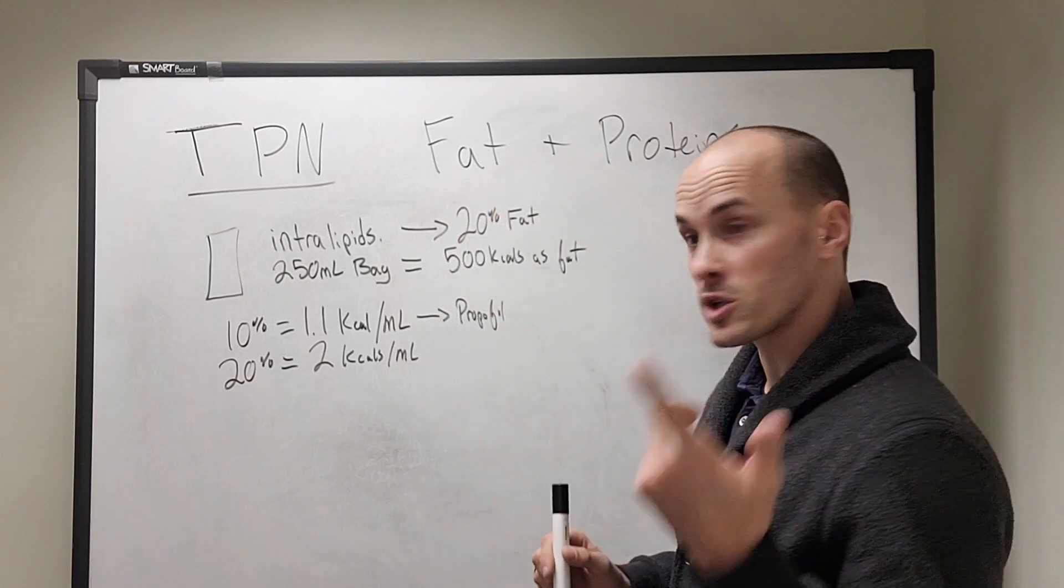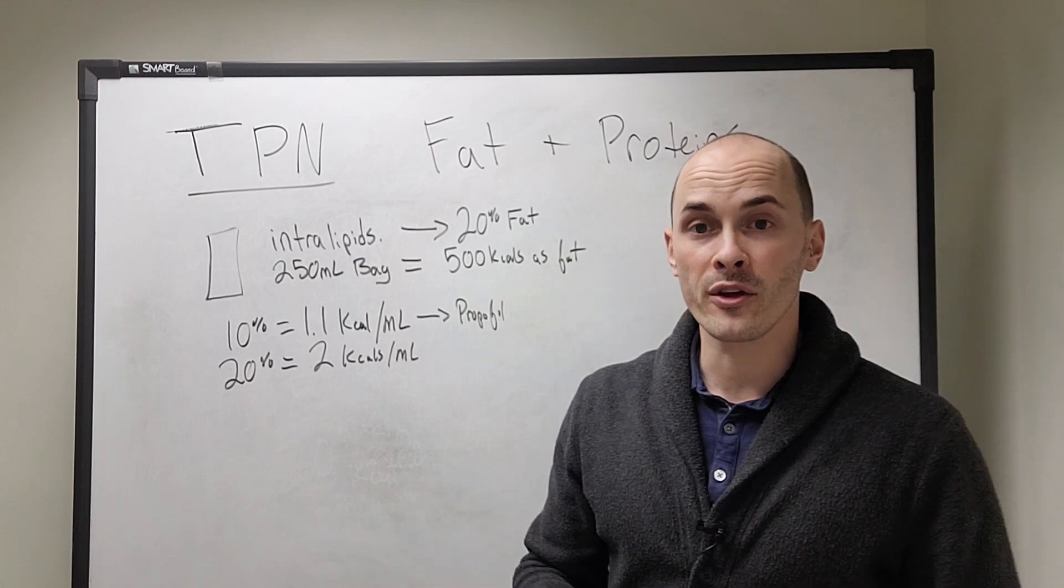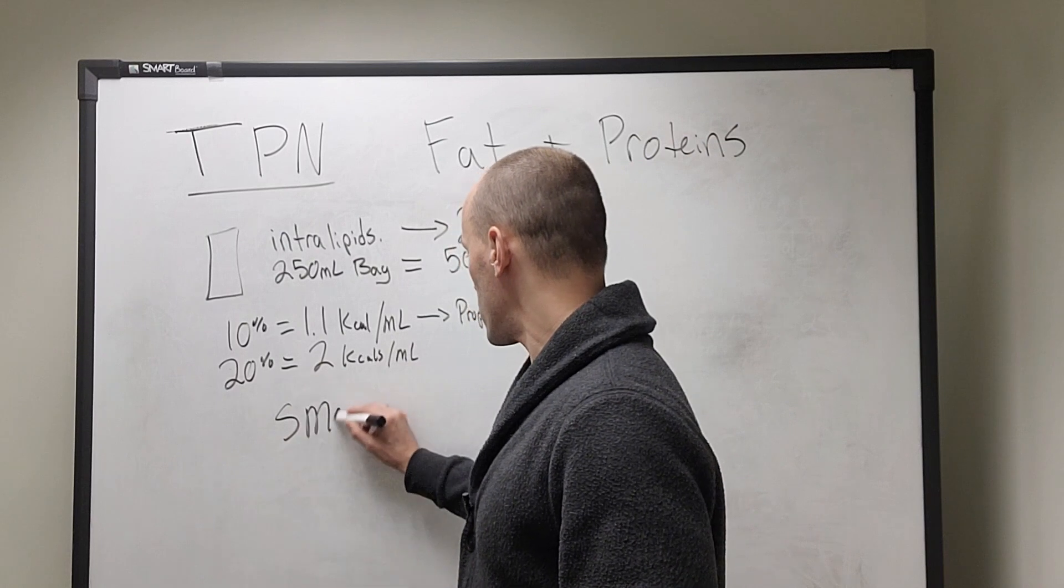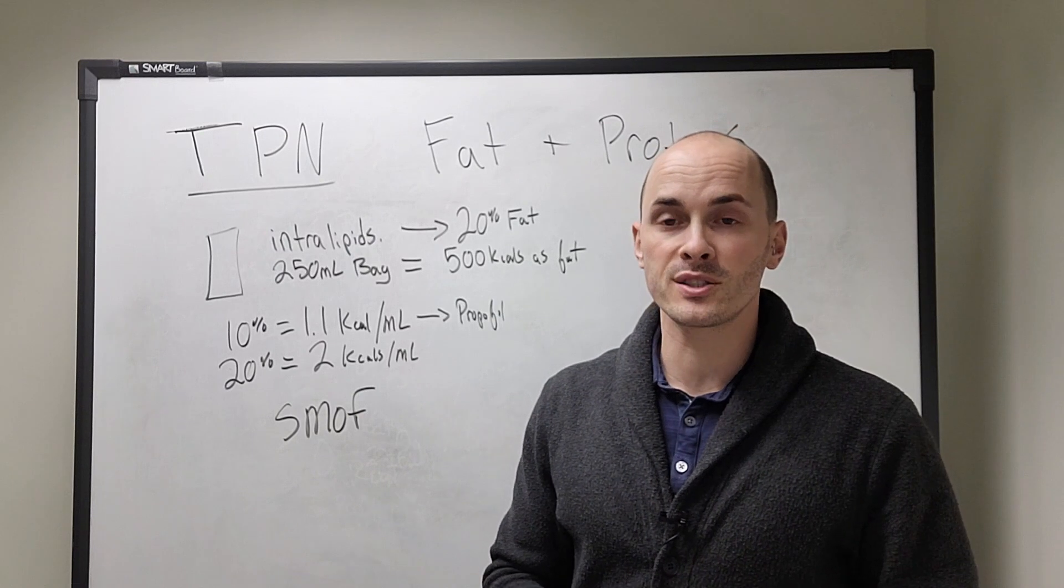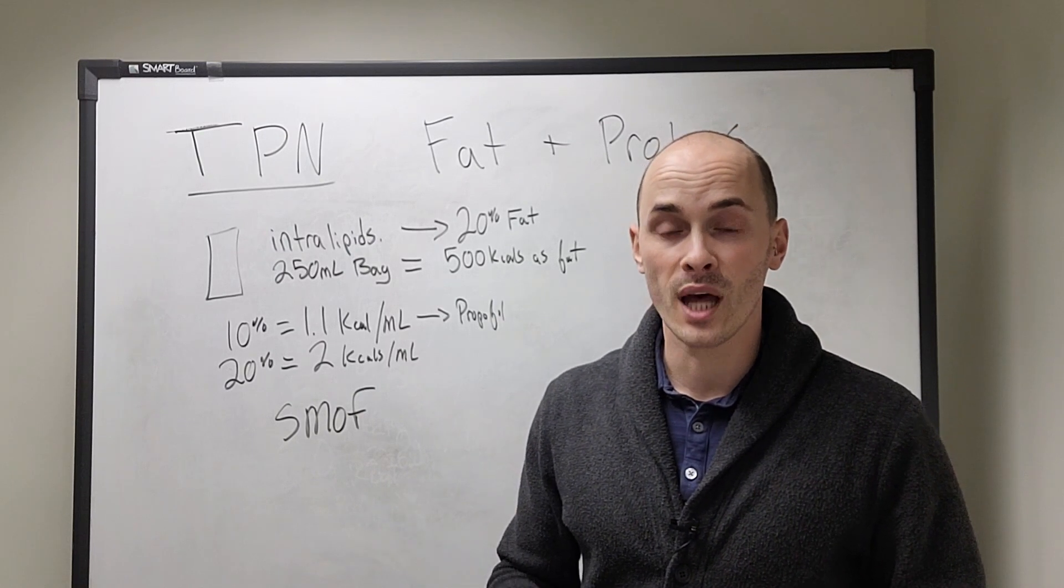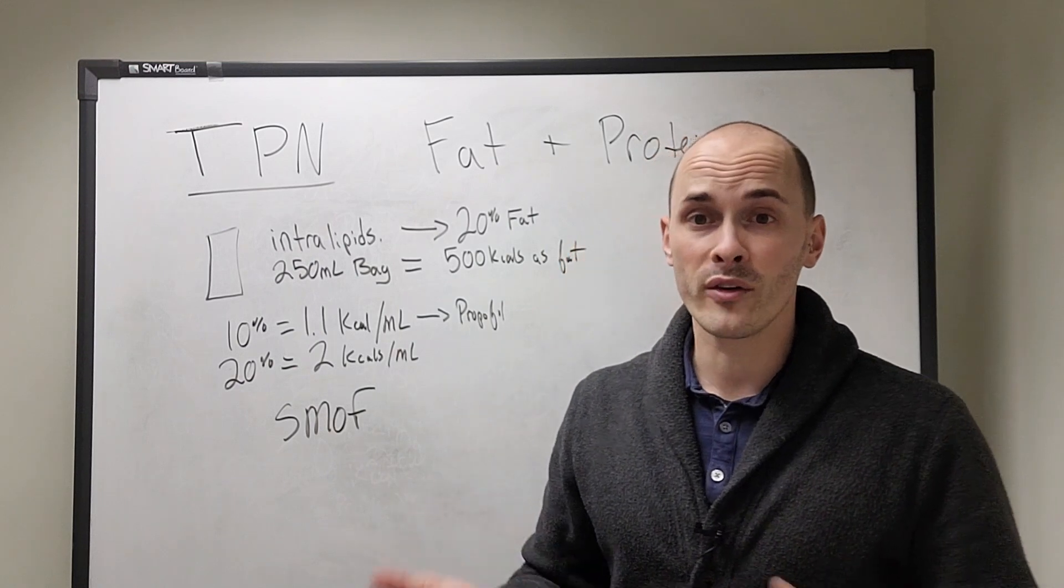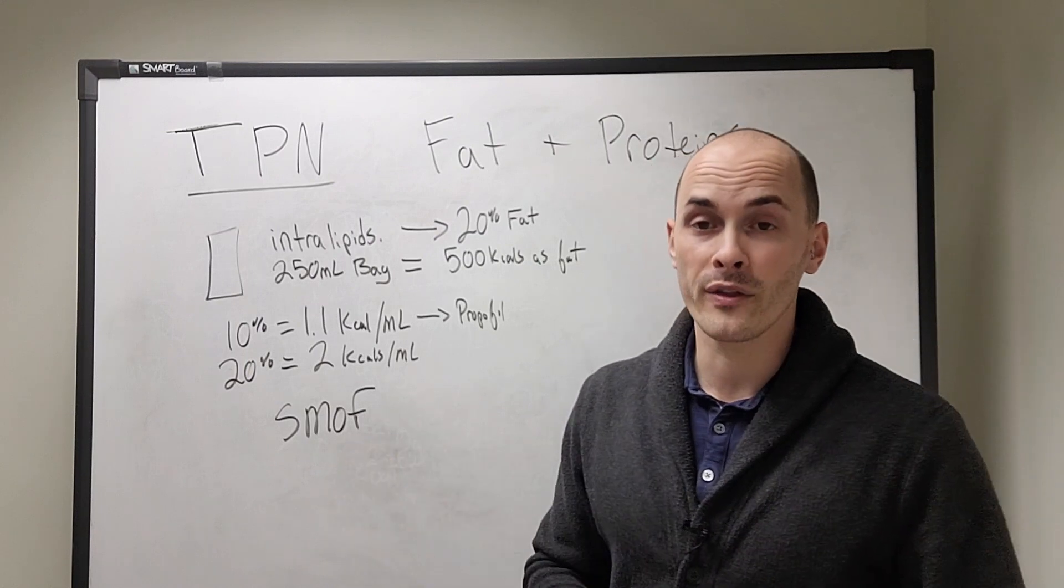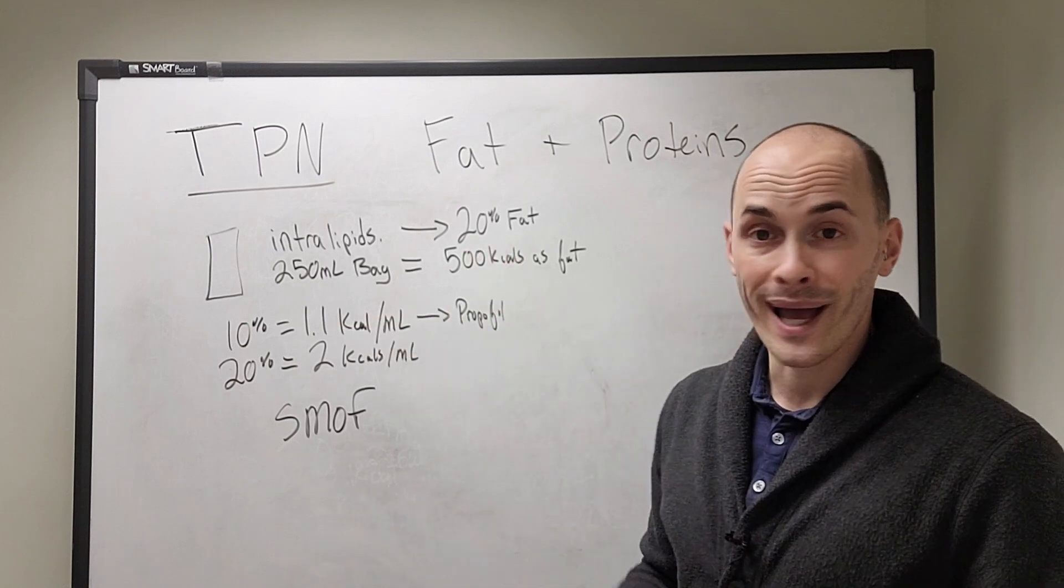So we've talked about dextrose. We talked about fat. Now, a few things to note on fat. There is something called smof lipids. These are a specific type of lipids. They're more anti-inflammatory used for ICU specific patients. We don't have them here in this hospital. It's kind of a smaller hospital. It's not a real big hospital. We have 120 beds. We don't carry smof lipids here, so I'm not going to comment on them. This is just going to be for your standard 20%, 250 mil bag of intralipids.